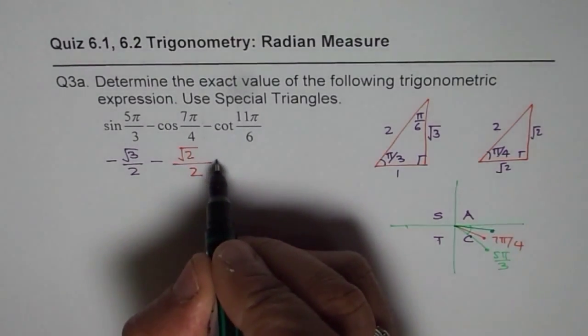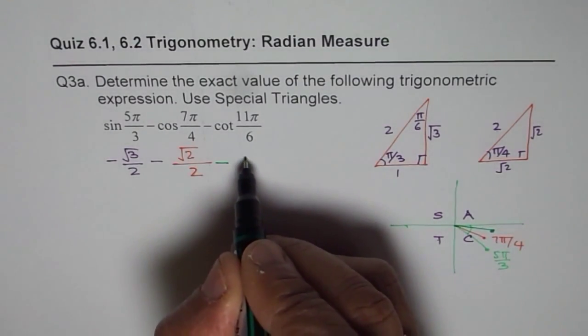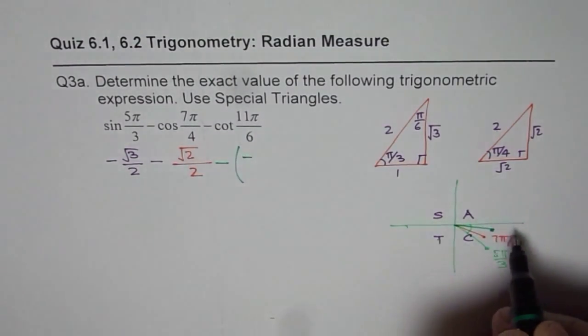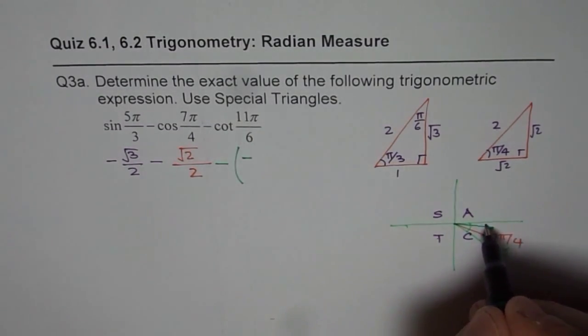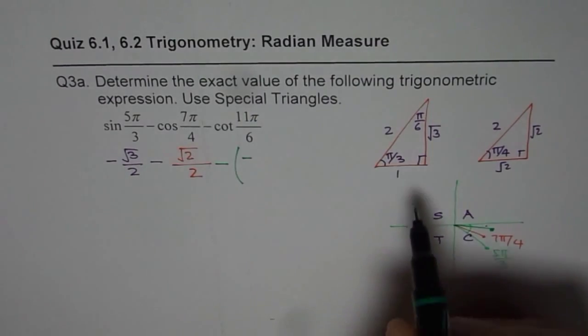Cotangent is negative. First, I am putting negative for this and then negative for my 4th quadrant. 11π/6 means π/6 is my acute angle.